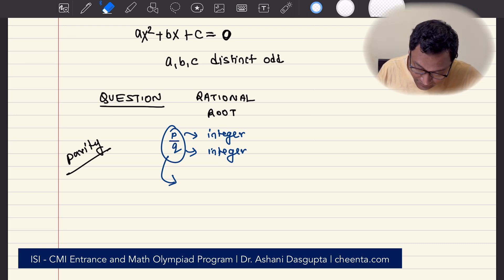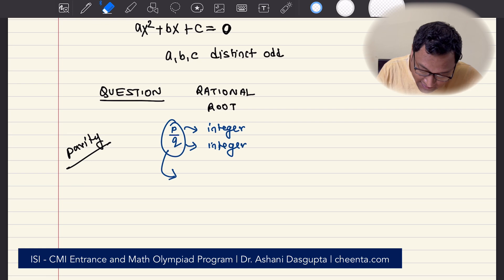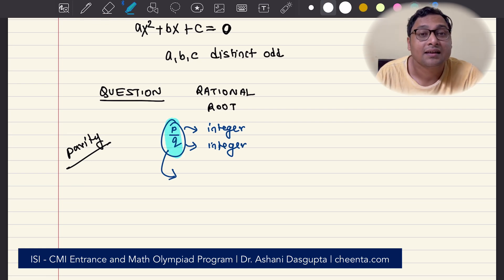If P over Q is a solution, both P and Q cannot be even numbers, because if both are even numbers, you can always cancel off the twos and reduce it to the smallest case.